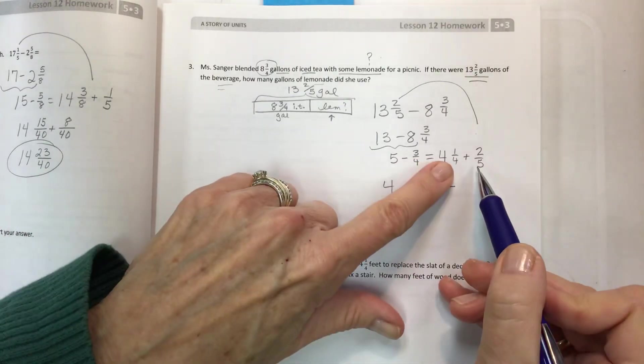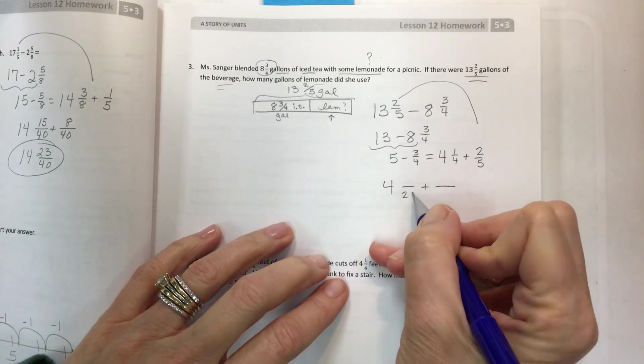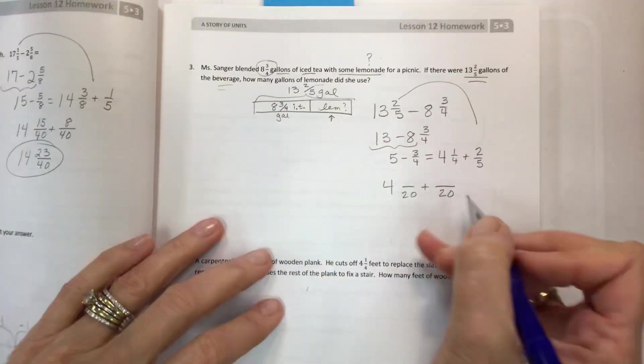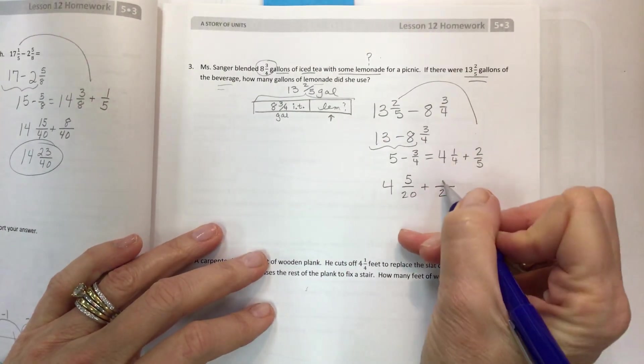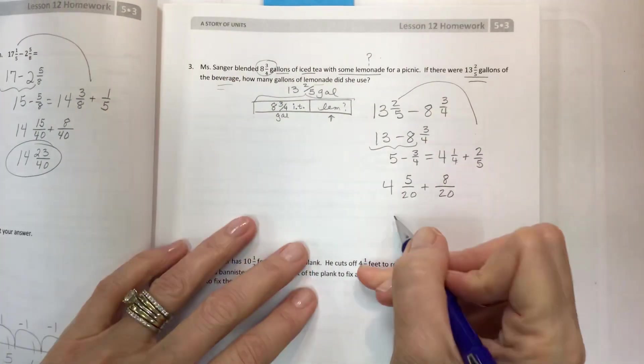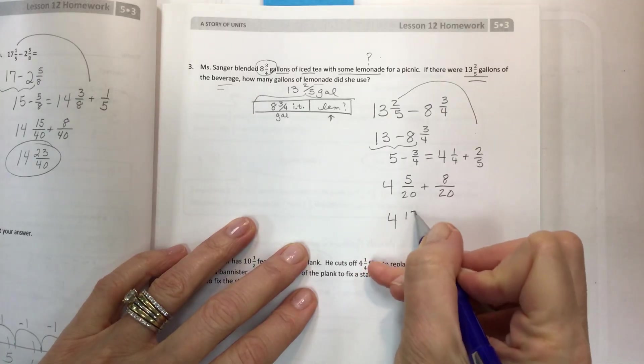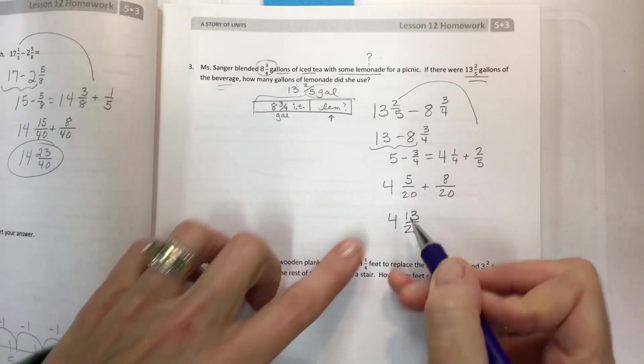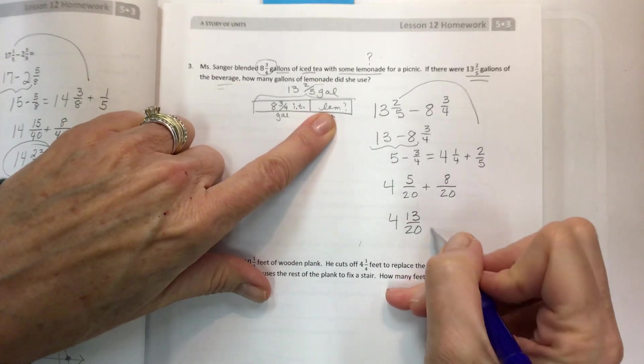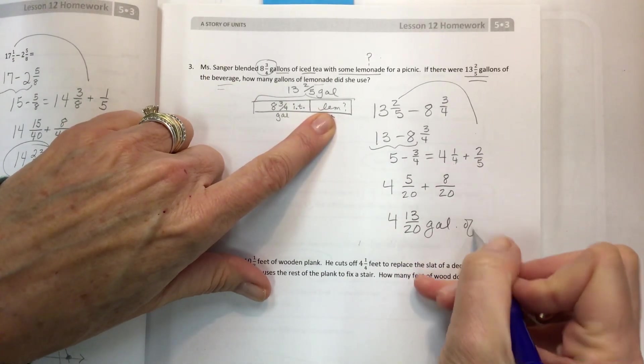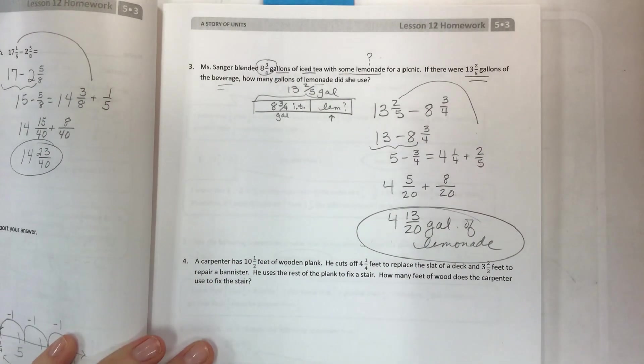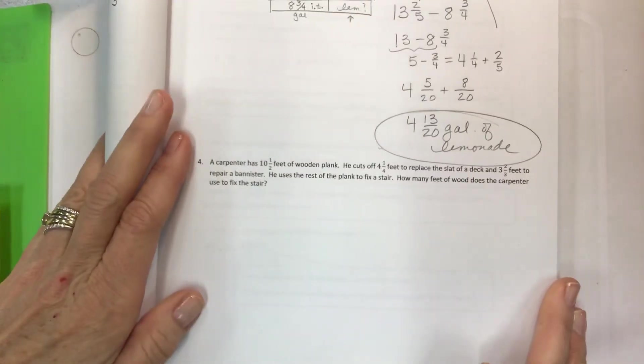So we have our four and one-fourth plus two-fifths. I need to have a common denominator for my addition problem, which we know is twentieths. We've done enough of these now to know that four and five make 20. The other number is the scale factor. Multiply by your numerator and the scale factor. And then add. And we get four and 13 twentieths. How do we label it? How many gallons of lemonade? Gallons of lemonade. And there's your answer. Yay. Making progress.